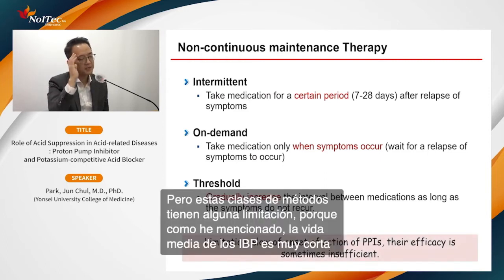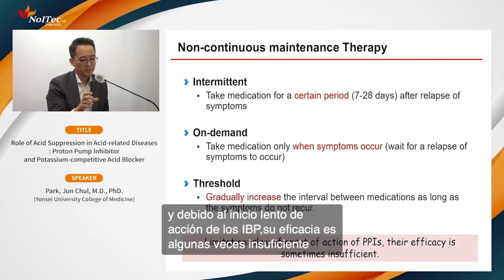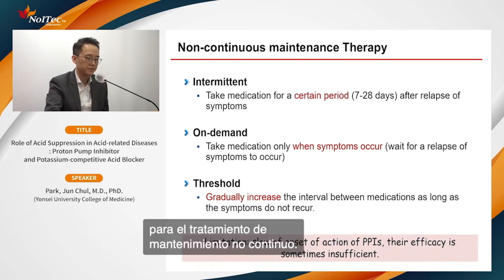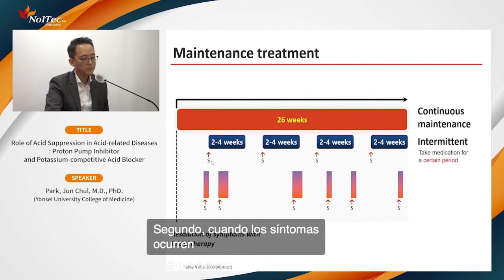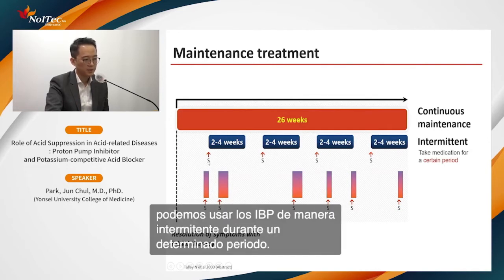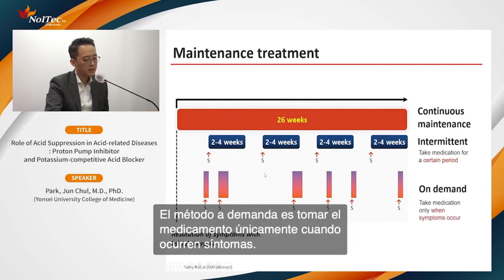These non-continuous methods have limitations because PPI's half-life is very short, leading to slow onset of action and sometimes insufficient efficacy. A schematic shows continuous maintenance, intermittent use when symptoms occur, and on-demand — taking medication only when symptoms arise.